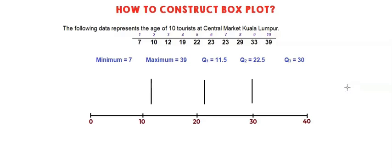Once you draw the vertical lines for Q1, Q2, and Q3, draw horizontal lines in order to get the box. Draw horizontal lines from Q1 up to Q3. Now we get a complete box.